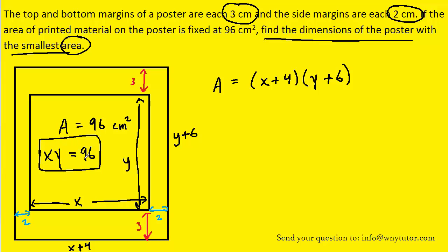For example, if we divide both sides of this by x, we see that y is equal to 96 divided by x. And what we can do is take the 96 divided by x and plug it in to the y of the equation that we're trying to optimize.